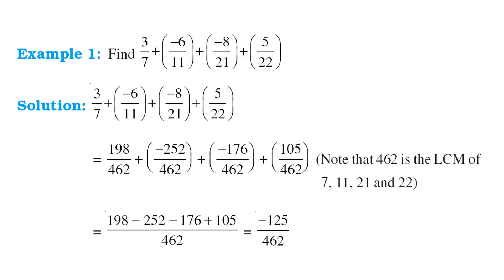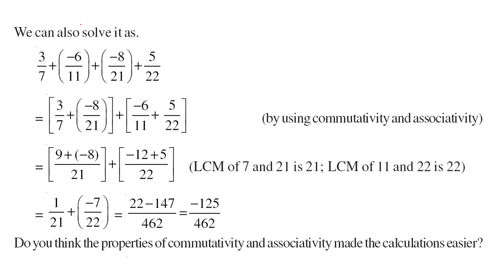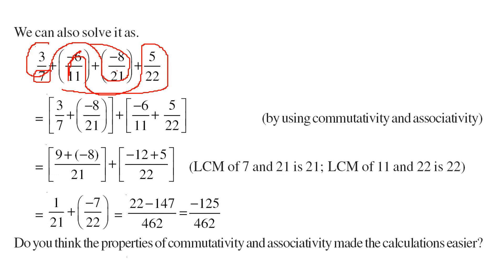Let us take a few examples. To add rational numbers, you can take the LCM of 7, 11, 21, and 22, which comes out to be 462, and then add the numerators once the denominators are the same LCM. Alternatively, you can combine pairs with related denominators — 7 and 21 (since 21 is a multiple of 7), and 11 and 22 (since 22 is a multiple of 11) — to make computing the LCM easier. Either way you get the same result.